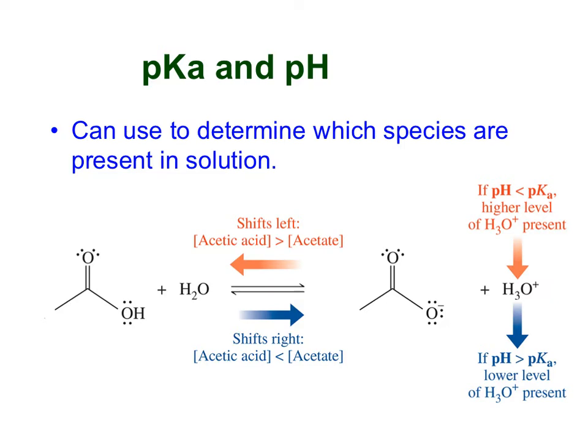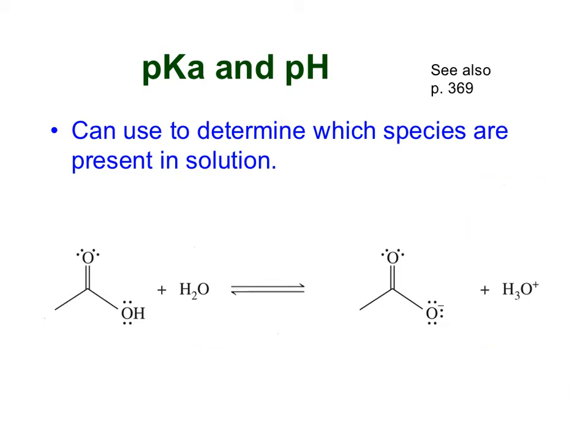So first we're going to look at this equation below. This was taken from the Smith textbook on page 369. So that would be in your supplemental materials on Blackboard. In this equation, this acid on the left is called acetic acid, adds to water, and then there's an equilibrium arrow, then it forms the conjugate base plus H3O plus. So hopefully you recognize this as the acid equation that we talked about earlier. In particular, we want to notice that H3O plus is on the product side. This is how we're going to be able to relate the pH to the pKa.